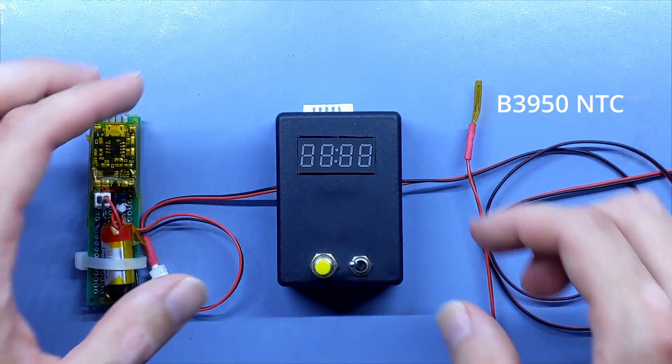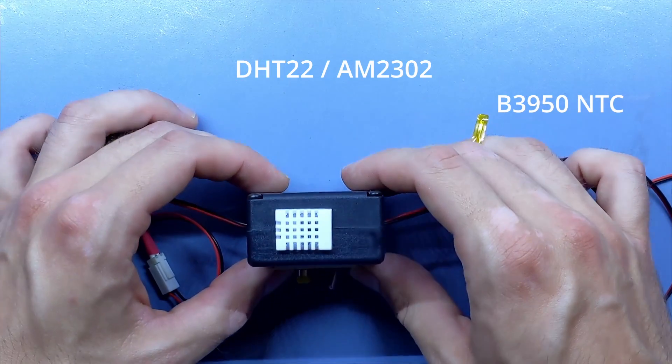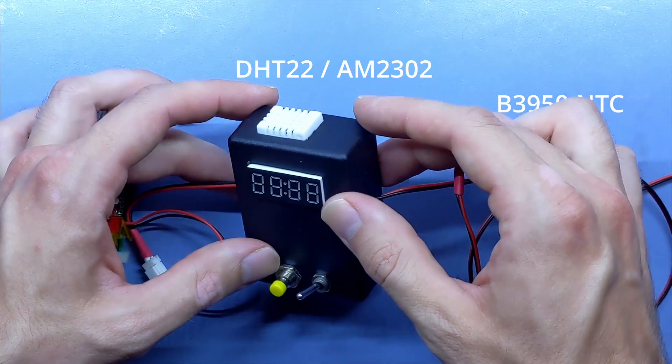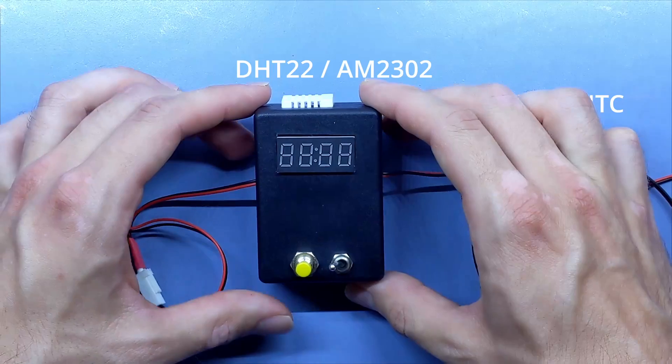The second is a DHT22 in an AM2302 package, providing ambient temperature and relative humidity readings.